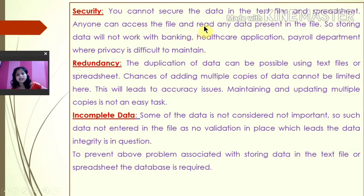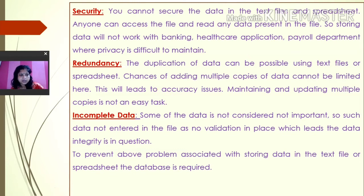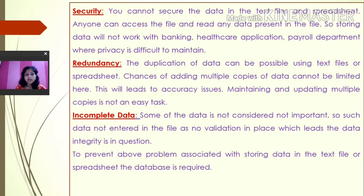Redundancy means duplication of data, which is possible using text files or spreadsheets. Chances of adding multiple copies of the same data cannot be limited, leading to accuracy issues. Maintaining and updating multiple copies is not easy. For example, if a student gives one address at school and another at a hostel, when you search for that student you will find two addresses, making it confusing. If data is stored in one central place, updates happen at one place only, minimizing data redundancy.